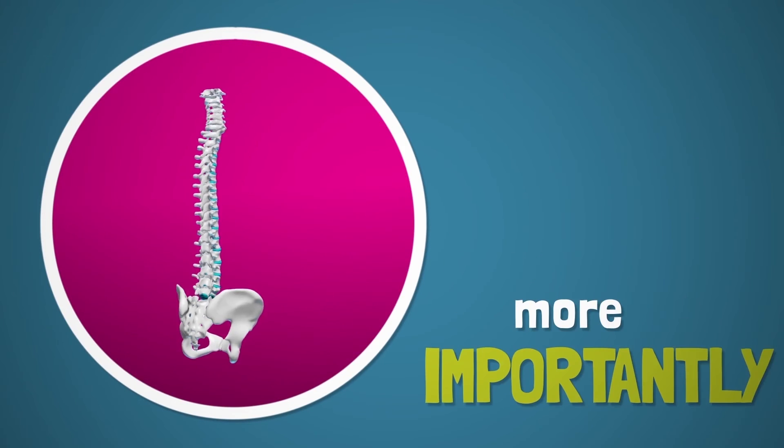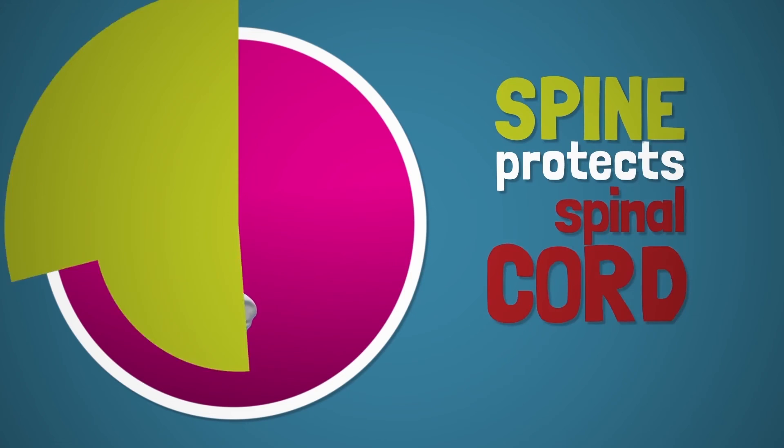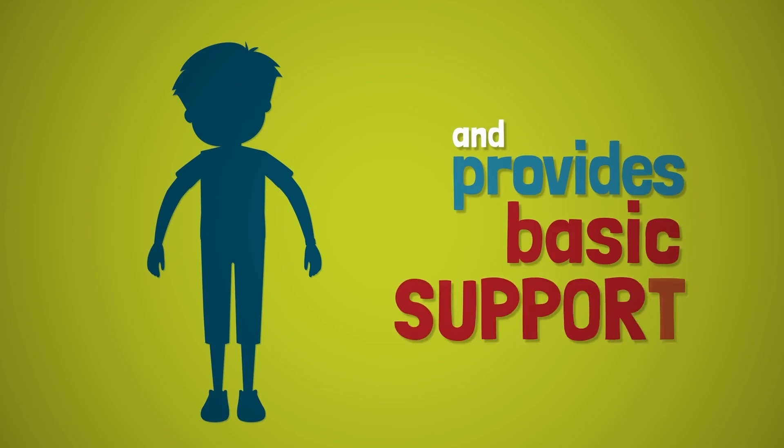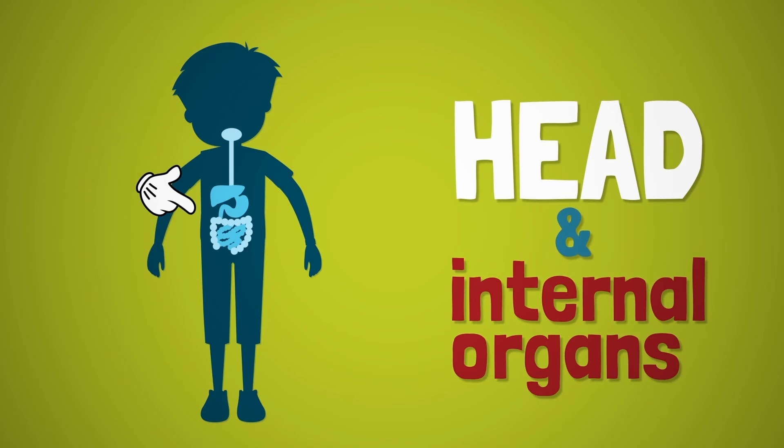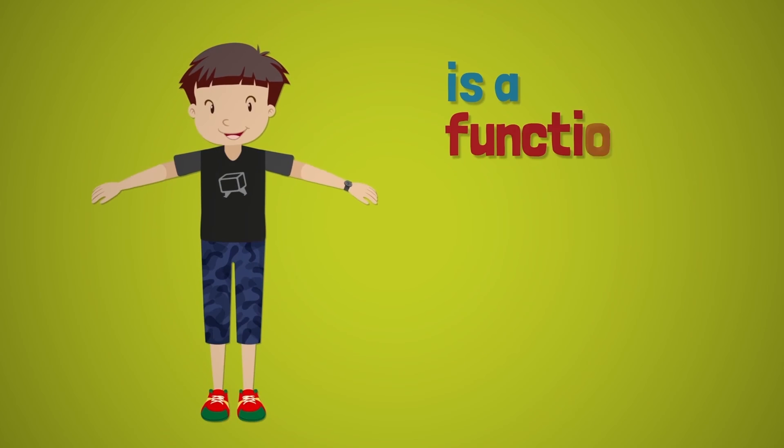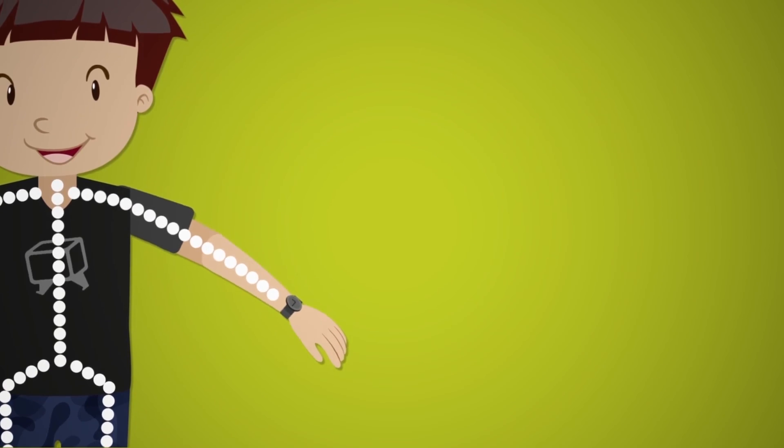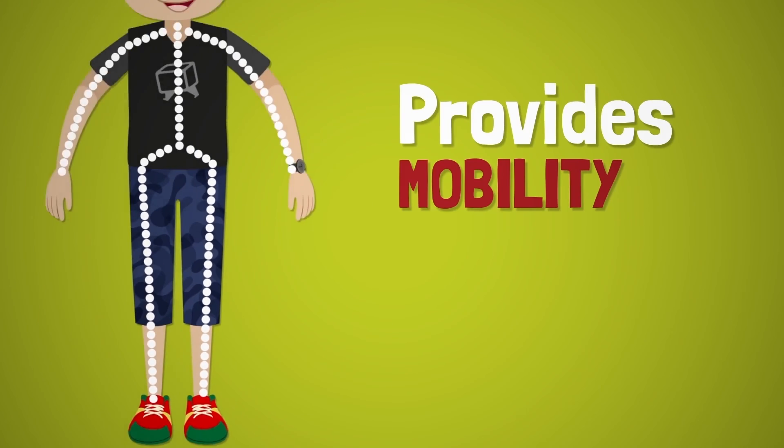More importantly, the spine protects the spinal cord and provides a base of support for the head and internal organs. It is a functional link between your arms and legs and provides the mobility for your trunk.